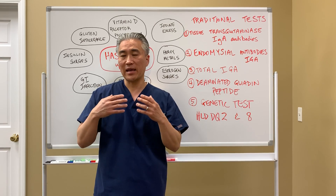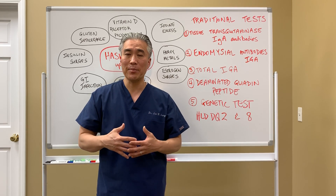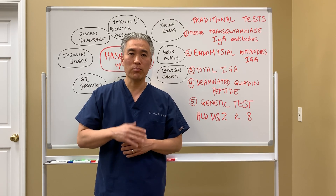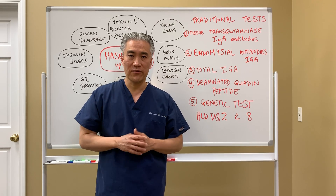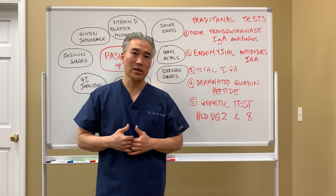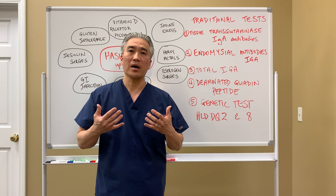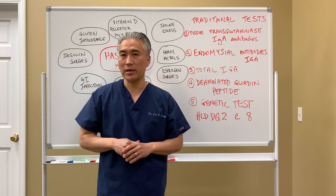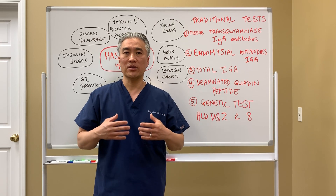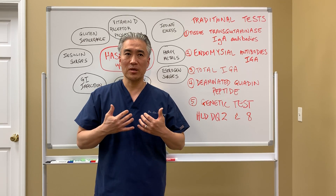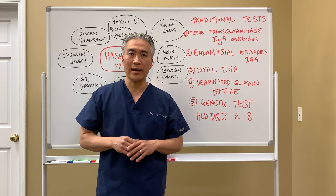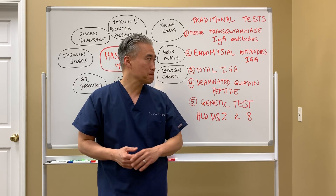You have to have enough damage in the gut lining to show blunting of the microvilli. So sometimes if you do an endoscopy early on it may not show celiac disease, because the degeneration of the microvilli hasn't occurred yet at that point.